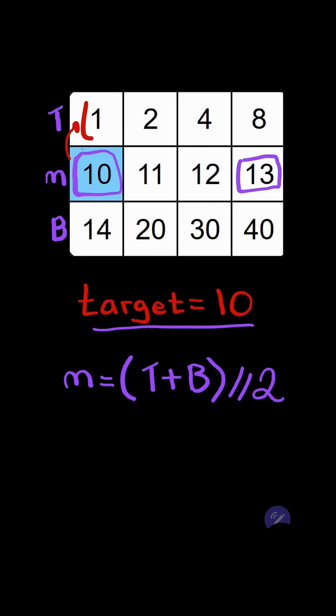If for example, the target was less than the first element, we would move the bottom pointer to mid minus 1. If for example, the target was greater than the last element, then we increase our top pointer to mid plus 1.